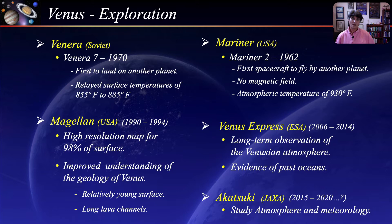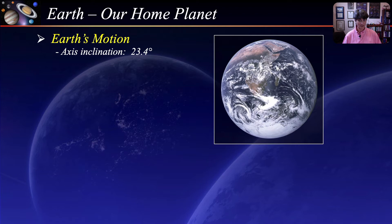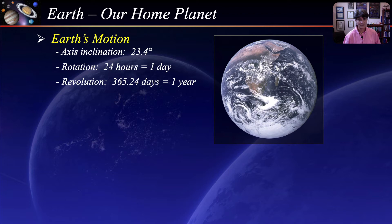Earth is the third planet from the Sun and the largest of the terrestrial planets. Earth's axis is inclined by 23.4 degrees, which gives us our seasons. One complete rotation about its axis takes 24 hours and is the definition of our day. The Earth takes 365 and a quarter days to complete one revolution around the Sun. The extra quarter day is why we have a leap year every four years, and the slight difference is accounted for in our calendar by eliminating three days over a 400-year period.